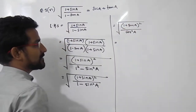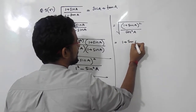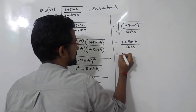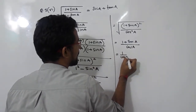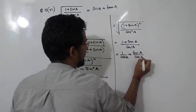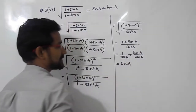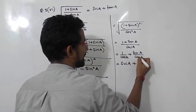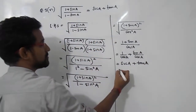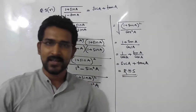Now both are perfect square values here, so we will take the values outside the root. It will become (1 plus sin A) divided by cos A. Now this cos A is for both, so that is (1 by cos A) plus (sin A by cos A). Now 1 upon cos A is nothing but sec A, and sin A by cos A is nothing but tan A, and that is nothing but equals to RHS.